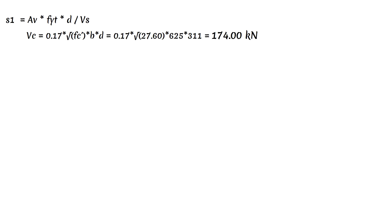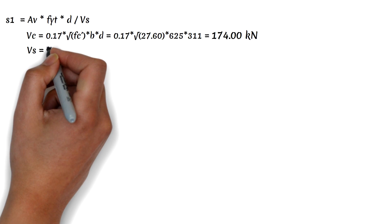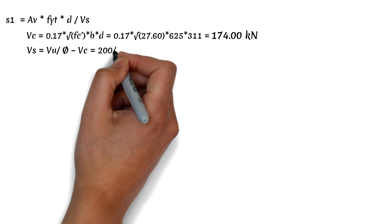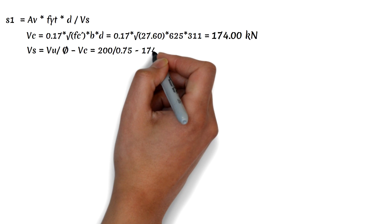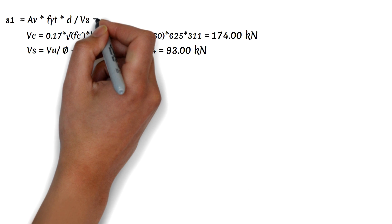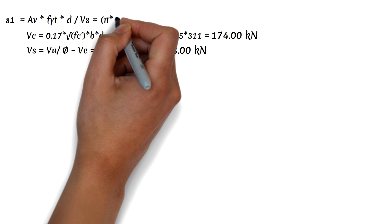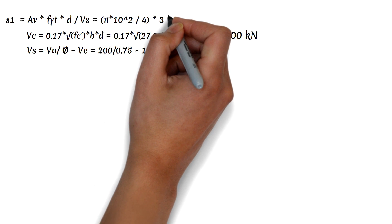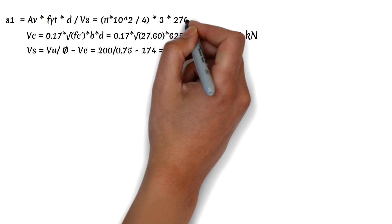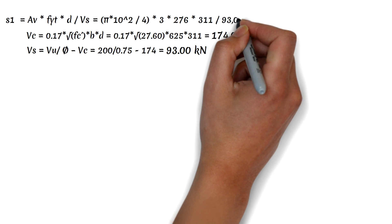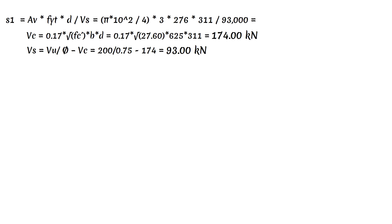Next, we calculate the steel shear strength Vs, which equals the ultimate shear force divided by the reduction factor phi, minus the concrete shear strength Vc, giving a result of 93 kN. Finally, the first spacing S1 equals pi times 10 squared divided by 4, times 3 (for three-leg lateral tie), times the 276 MPa shear reinforcement yield strength, times the effective depth d, divided by the steel shear strength Vs, which gives us 217 mm.